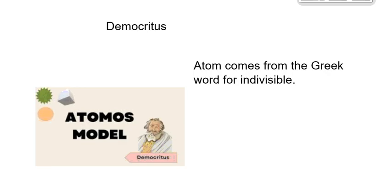We start with our Greek philosopher, Democritus, who hypothesized that atoms existed and they were very tiny and they were the building block of all matter. An atom actually comes from the Greek word indivisible. These little atoms could not be broken apart.